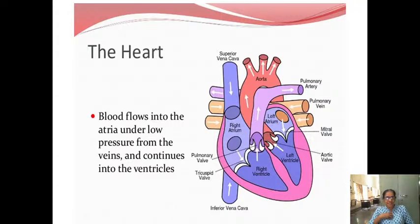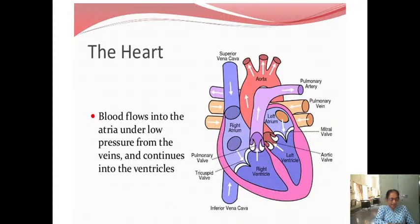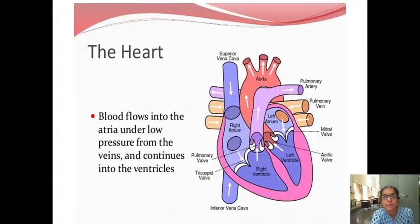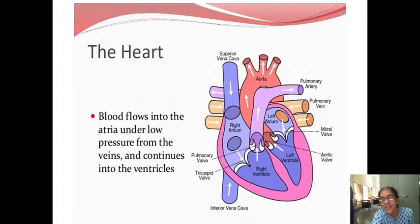Blood flows into the right atrium from the veins — from the superior vena cava from the upper part of the body, and from the inferior part of the body via the inferior vena cava. From the right atrium the blood goes into the ventricles. When the AV valves open, blood from the right atrium enters the right ventricle.